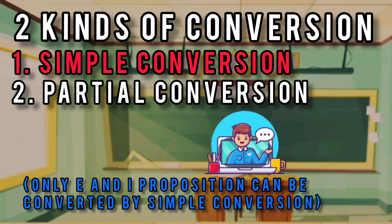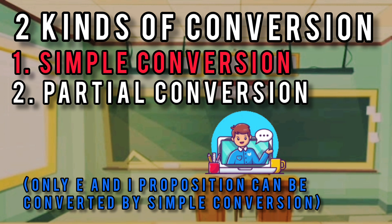The convertent is the original proposition, the converse is the new one, and conversion is a process of formulating a new proposition from the original simply by interchanging the subject and the predicate, without touching or changing the quality of the original proposition.